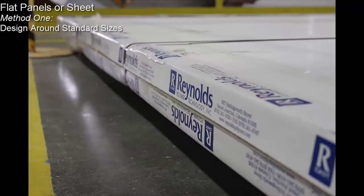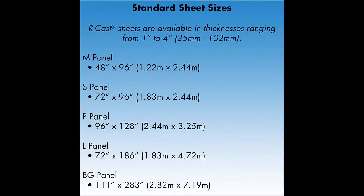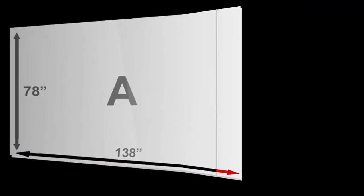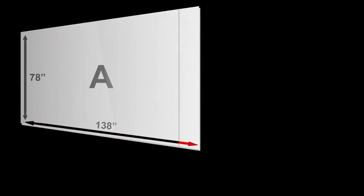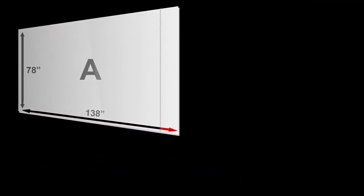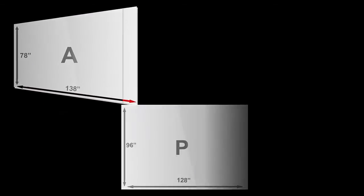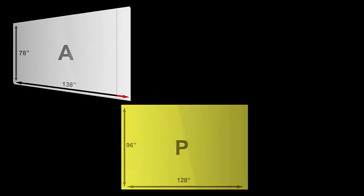R-Cast acrylic is cast in a number of standard dimensions. It can be enlightening to know just how much cost is accumulated through even small additions of material to a standard sheet. The figure represents a common scenario in which length has been added to a standard panel P in order to fit custom measurements, panel A. In this case, the P panel was cut to 78 inches in height and 10% of material was added to the length, requiring a chemical bond and further finishing.